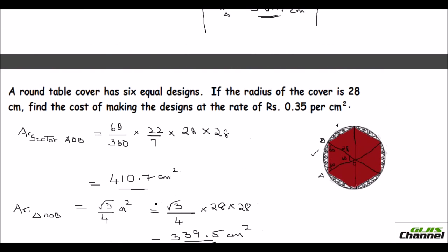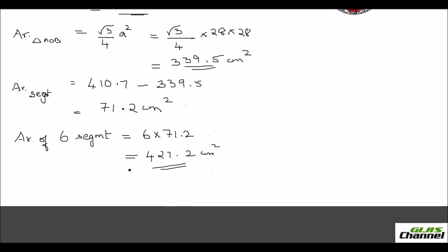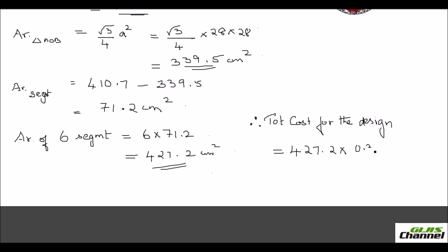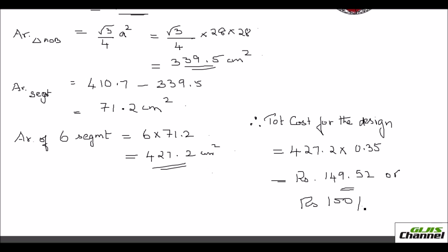From the question, find the cost of making the design at the rate of 35 paise (0.35) per cm². Total cost = 427.2 × 0.35 = ₹149.52, approximately ₹150.